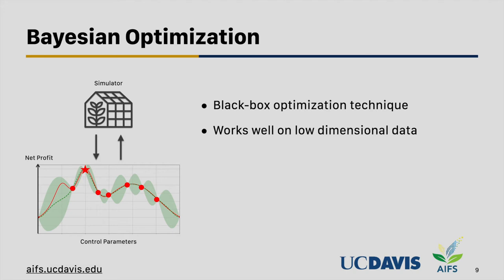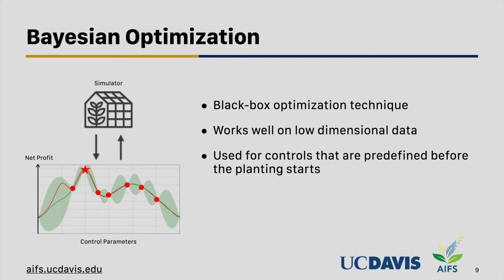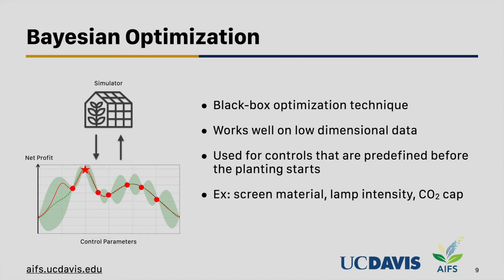Bayesian optimization works really well on low-dimensional data, so we apply it to controls that need to be fixed throughout the planning period, such as screen material, lamp intensity, or the cap of CO2 output set points. Since these controls are fixed, we do not need to change them based on weather, keeping the dimensionality low — and Bayesian optimization works very well in that setting.